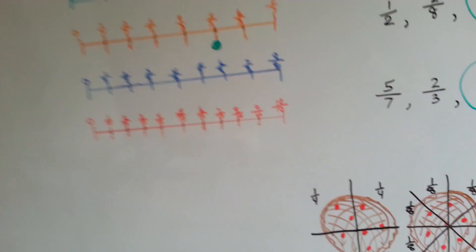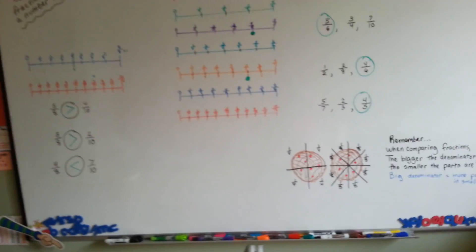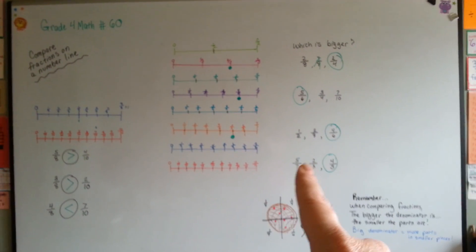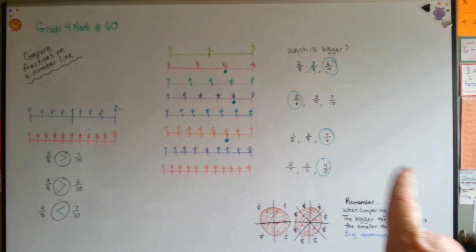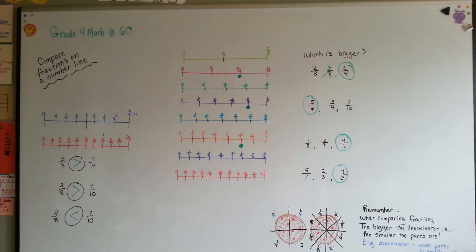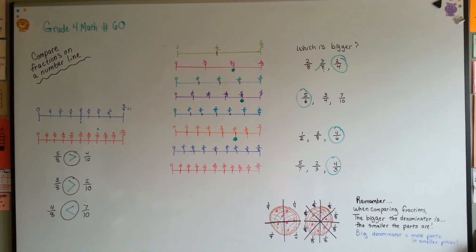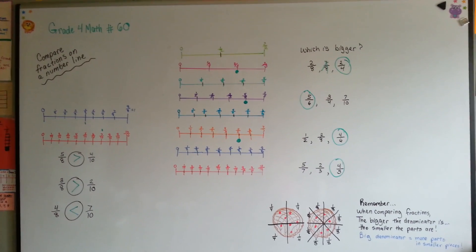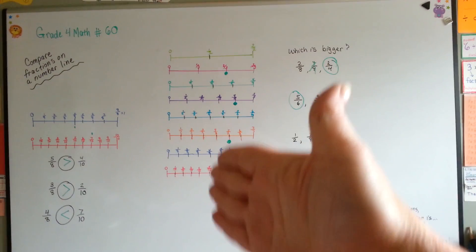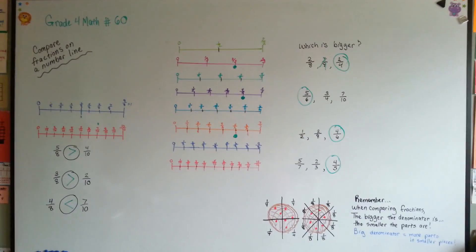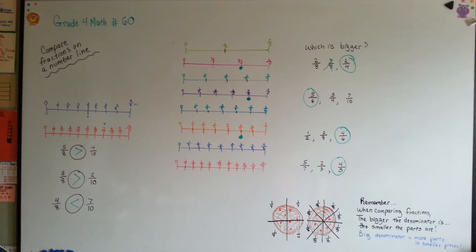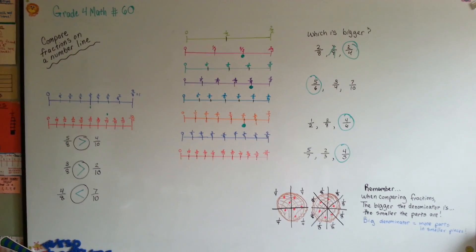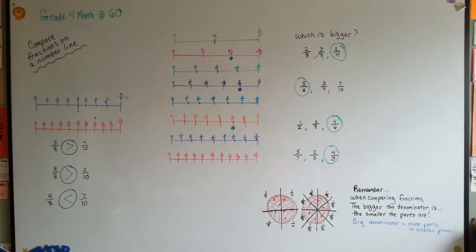That's how you can use a number line to compare fractions and to figure out which one is bigger and to put them in order. If we had more time, we could have found the next biggest one and put them in order by size. Number lines can be very useful to tell if fractions are bigger or smaller than another fraction, or even to tell if they're equal. If 2 fractions had ended up on the same spot, like the halfway mark, we would have known they were equivalent fractions. I'll see you next video — we're going to keep talking about fractions. Bye!